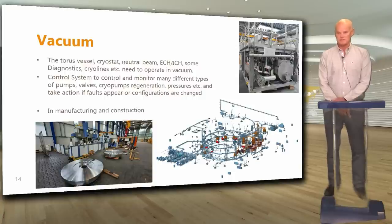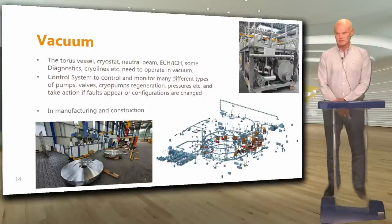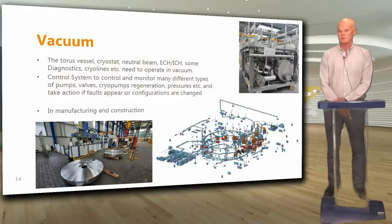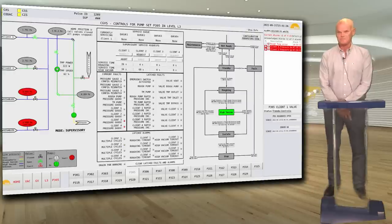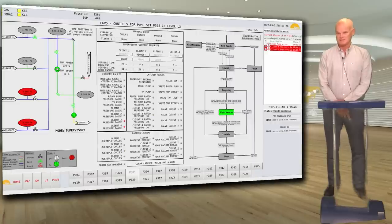Then we have vacuum. We need vacuum in the vessel, the cryostat, neutral beam and other places. The control system controls and monitors many different types of pumps, valves, regeneration of cryopumps, etc. This system is in manufacturing and construction. A 3D model shows all the vacuum components around the tokamak, which is quite impressive. One part of this vacuum system generates a cryogenic guard vacuum, and a recent factory acceptance test demonstrated that the control system automates the process of pumping down the client and isolating it.